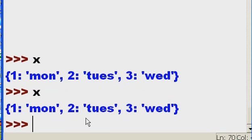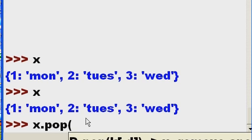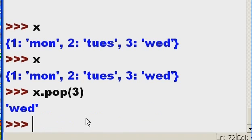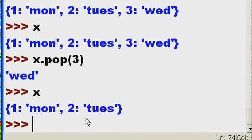Now I'm going to key in x and I get the entire dictionary printed out. I want to get rid of number three, Wednesday. How do I do that? x.pop open parens. Now I have to key in the key value. The key value happens to be three, the actual number three, and it's now gone. Again, x comes up Monday and Tuesday.